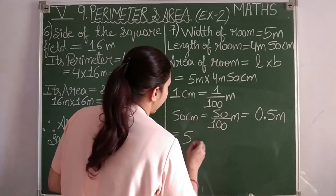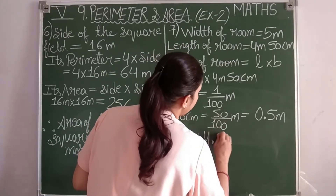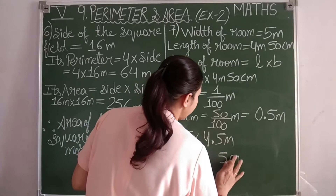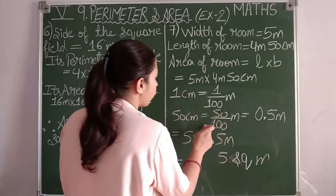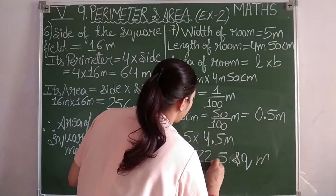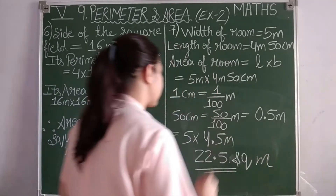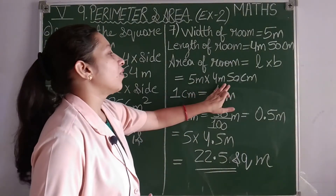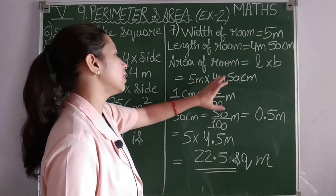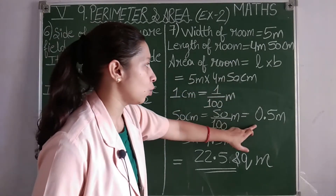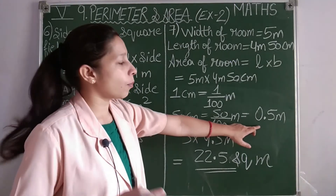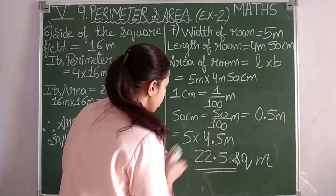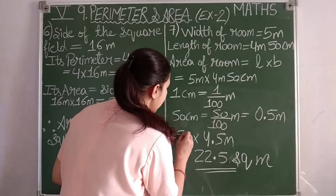Now both are in meters: 5 meters into 4.5 meters. Multiplying: 5 fives are 25, carry 2; 5 twos are 10, plus 2 is 12 — so we get 22.5 square meters as the area of the room. When units are different, convert them to the same unit before multiplying.